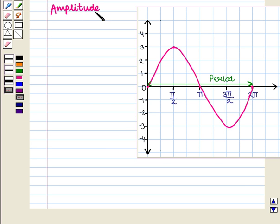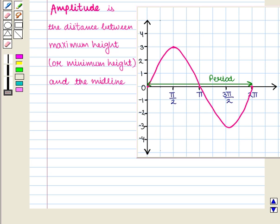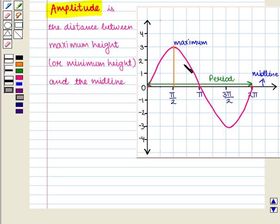Now we shall find its amplitude. We know that amplitude is the distance between maximum height or minimum height and the midline. Here we see that the maximum height is at y equals 3 and the midline is given by y equals 0. So amplitude is given by maximum height, that is 3, minus midline, that is 0. So this is equal to 3.